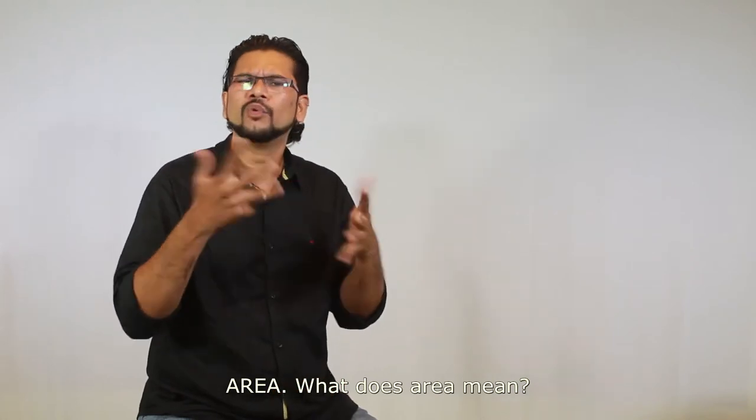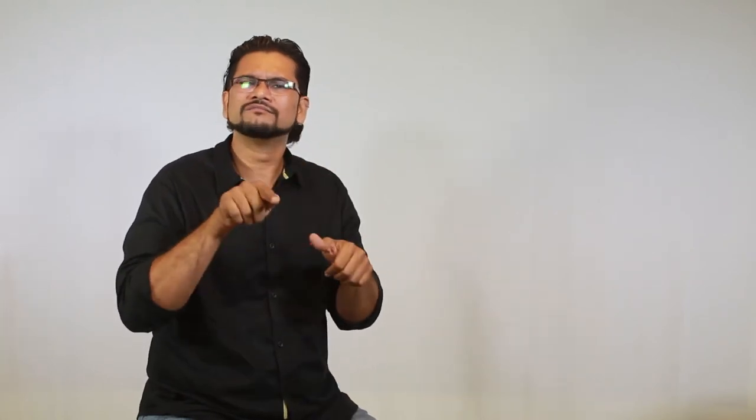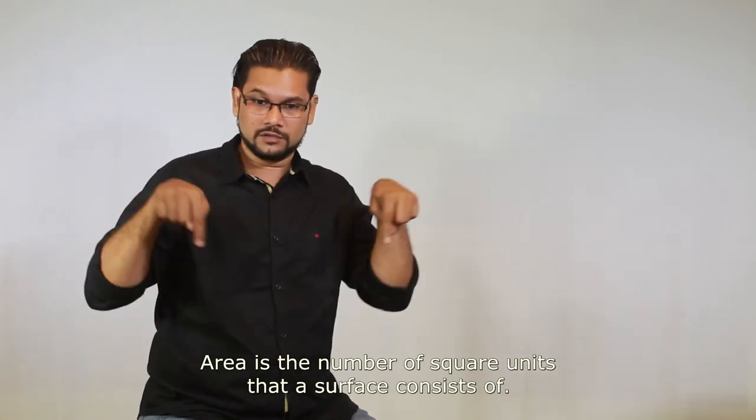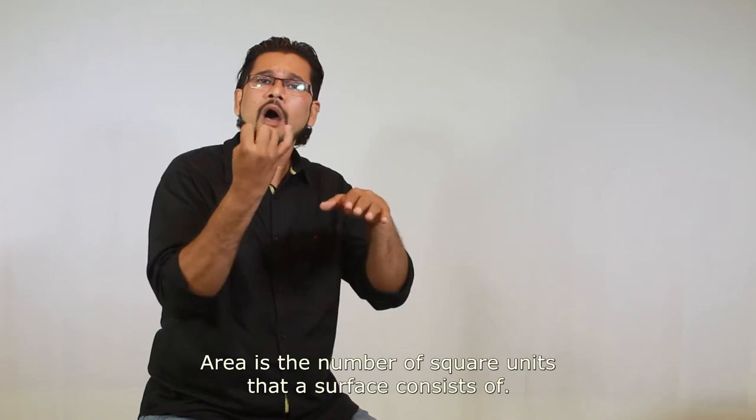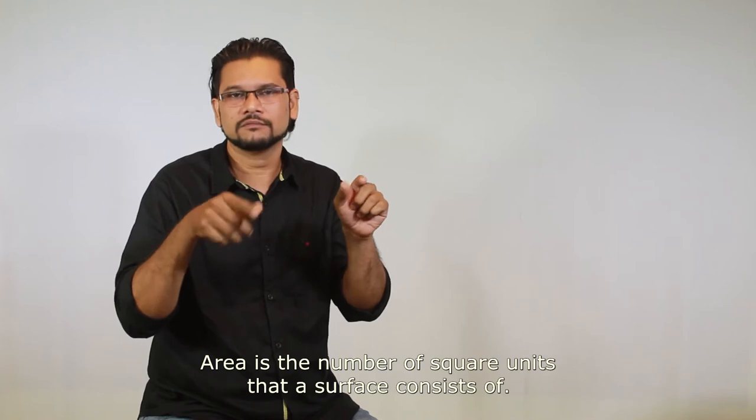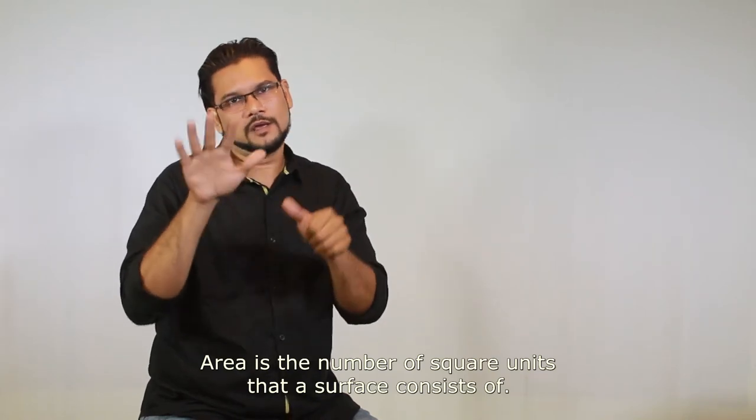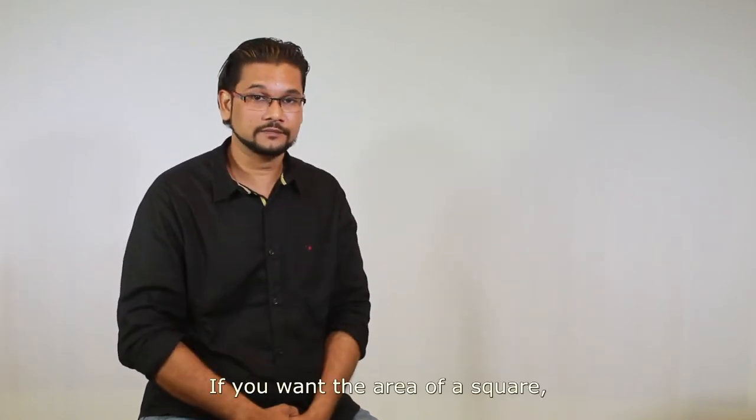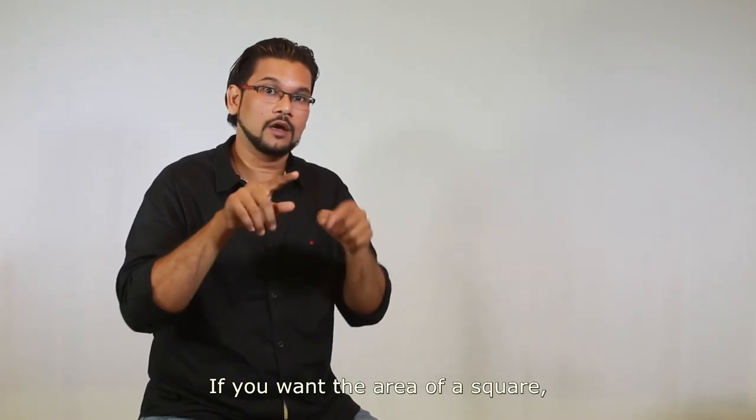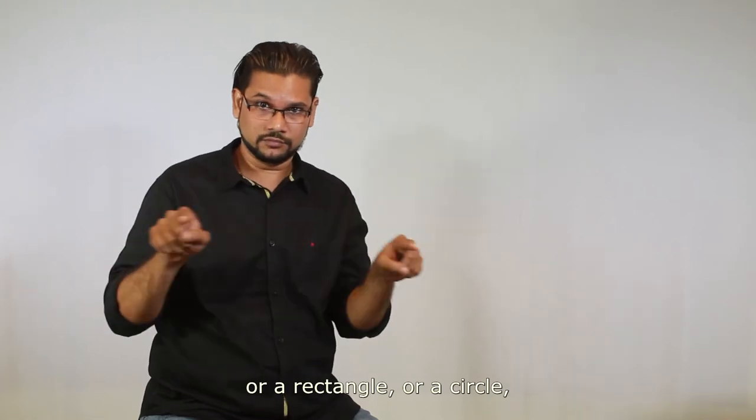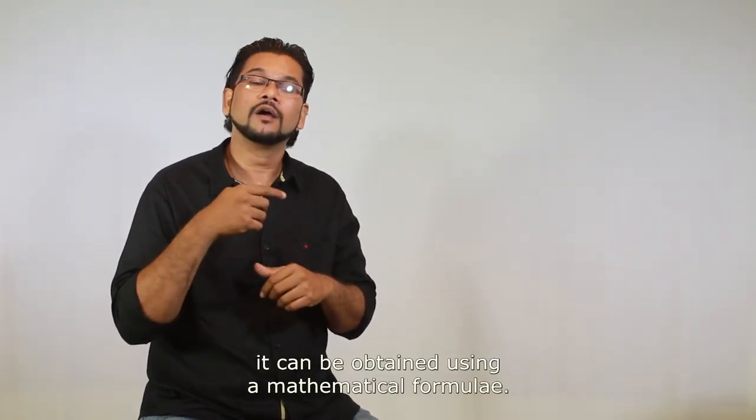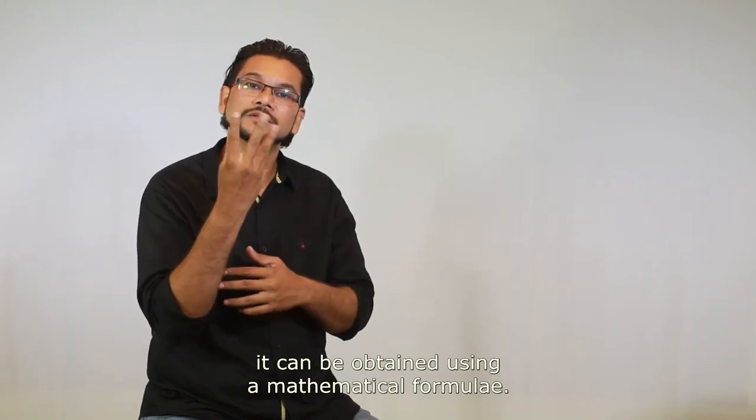Area. What does area mean? Area is the number of square units that a surface consists of. If you want the area of a square, or a rectangle, or a circle, it can be obtained using mathematical formulae.